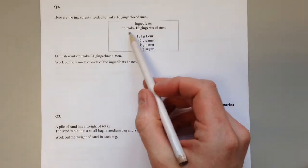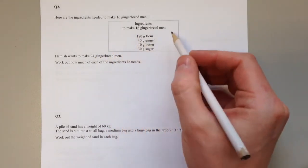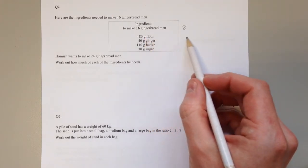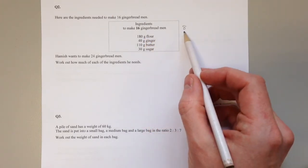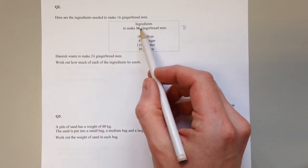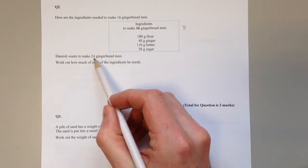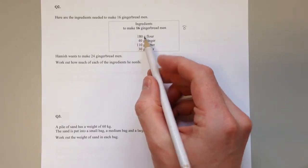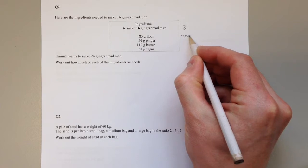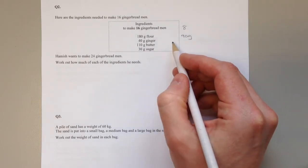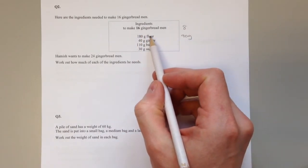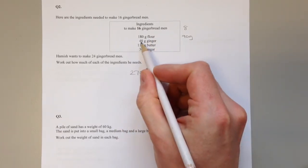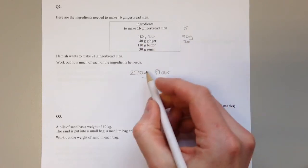You've got to spot the link between 16 and 24. If you half 16 you get 8. So if we half all these ingredients, it tells us how much we need for 8 gingerbread men. But then 16 plus 8 gives us 24 gingerbread men. For 16 gingerbread men we need 180 grams of flour. That means we need 90 grams of flour for 8 gingerbread men.